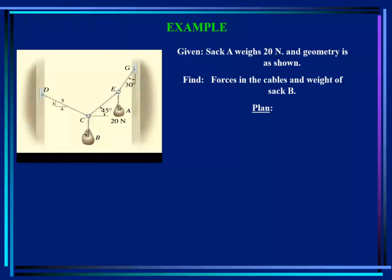Sag A weighs 20 newtons and the geometry is shown. We need to find the forces in the cables — specifically the force on cable DC, cable CE, cable EG — and we need to find the weight of sag B. These are the unknowns that we need to calculate.